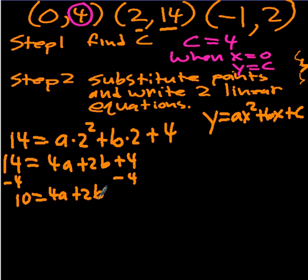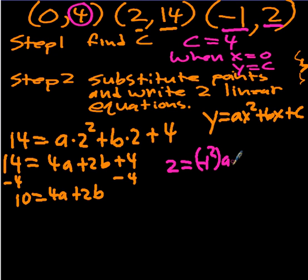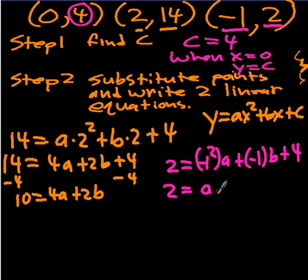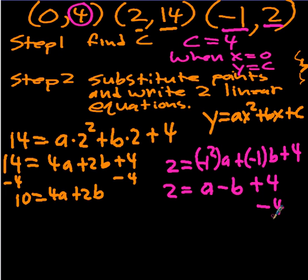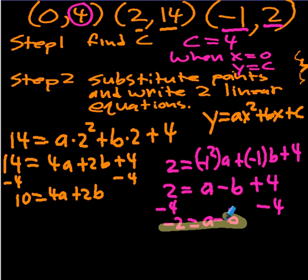Now I'll do the next one using the other point (-1, 2). So: 2 equals negative 1 squared times a plus negative 1 times b plus 4. Simplifying — negative 1 squared is positive 1 — so that's a minus b plus 4. Subtracting 4 from both sides: negative 2 equals a minus b. And so now I have my two equations.